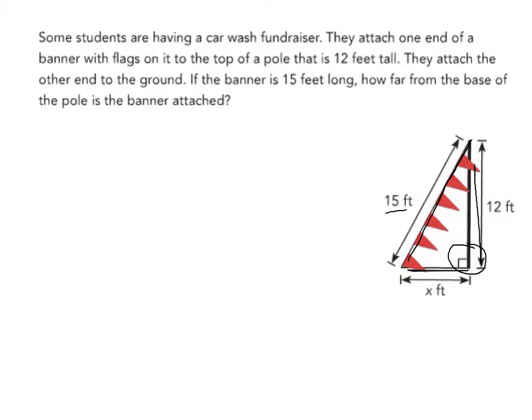So let's set up our Pythagorean Theorem. So again, my Pythagorean Theorem is a squared plus b squared equals c squared.